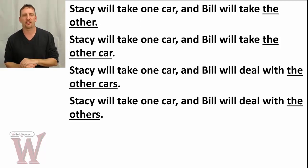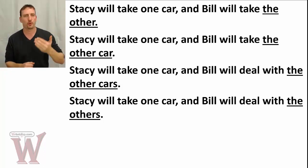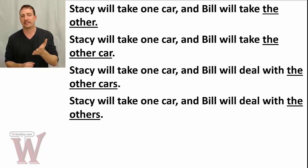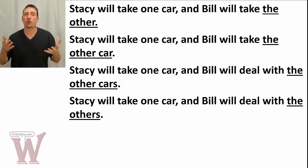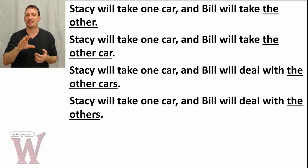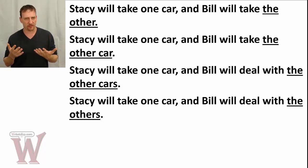A quick example with "the other": "Stacy will take one car and Bill will take the other" — we understand there are only two cars. You can also say "Bill will take the other car" — both are fine. But "Stacy will take one car and Bill will deal with the other cars" — the reader must already know they have more than two cars. If that hasn't been established, it could be confusing.